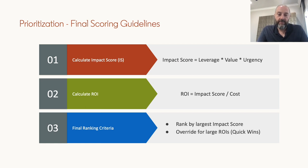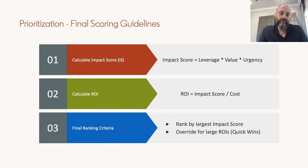Finally, we compute the impact score — which is Leverage × Value × Urgency — and prioritize our backlog from the biggest impact score going down. We also realize some asks have a small cost and can be quick wins, so we compute the Return on Investment, which is the impact score divided by the cost. When we identify high-ROI items in our backlog, we override and push their ranking higher.